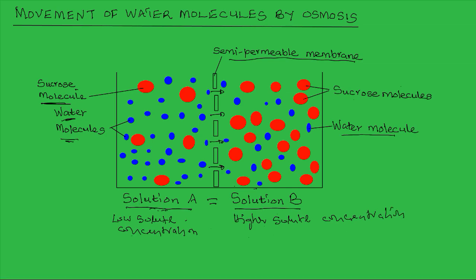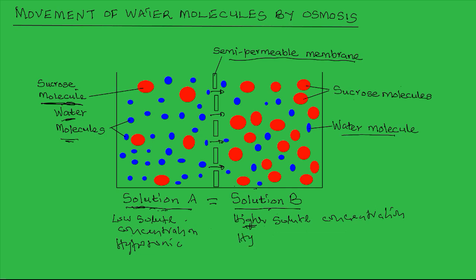Now, in terms of solute concentration, solution A has a lower concentration of solute — in this case, the sucrose molecules — relative to solution B that has a higher concentration of solutes. So solution A is therefore said to be hypotonic, while solution B is said to be hypertonic — hyper meaning above and tonic referring to solute concentration.